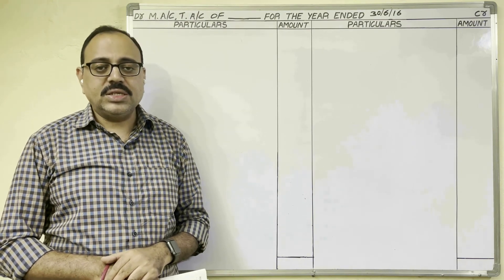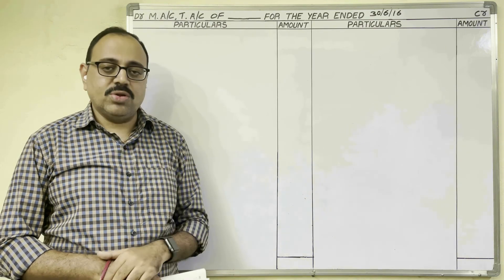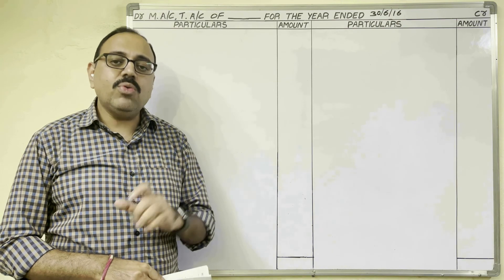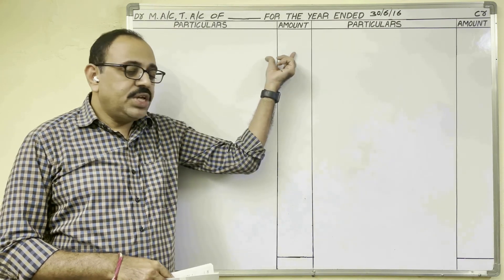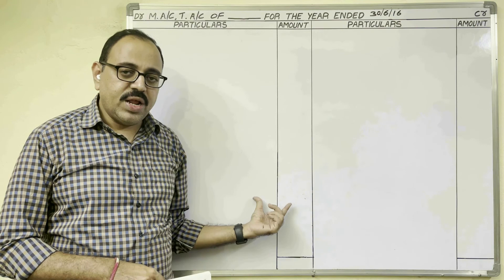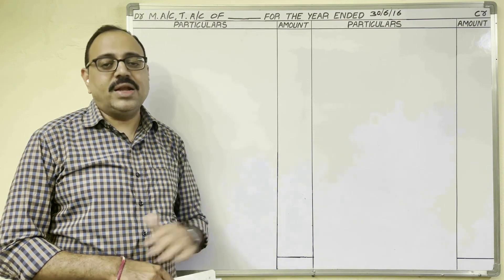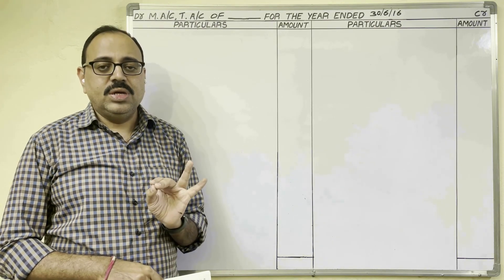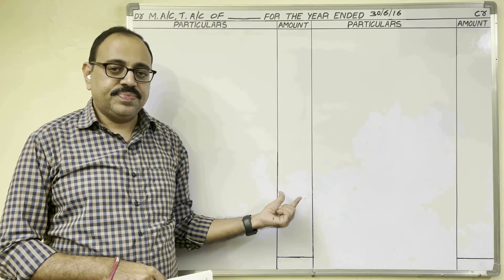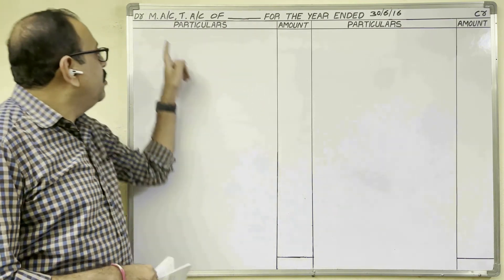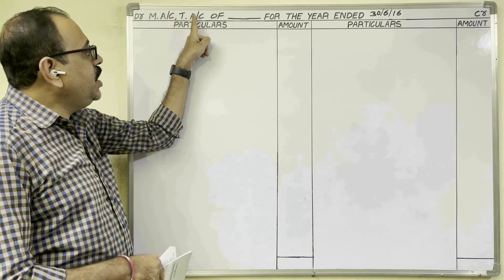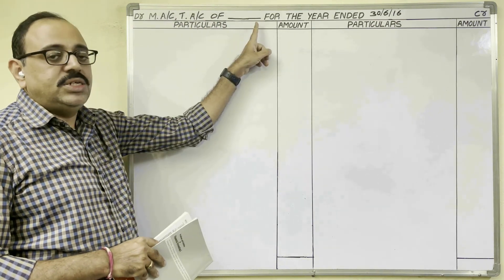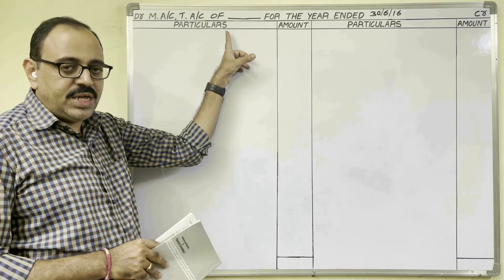Manufacturing concerns want to know the cost of manufacturing and cost of production. Therefore their final accounts include manufacturing account, trading account, and profit and loss account. These three accounts they prepare in one table. The heading is manufacturing account, trading account. In this question the firm's name is not given, therefore a dash. If the firm's name is given, that name should be written. The year ended is 30th June 2016.